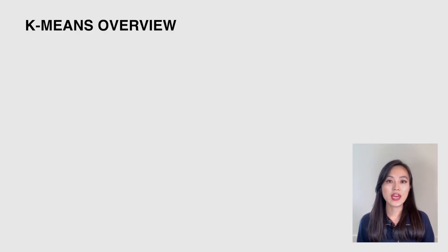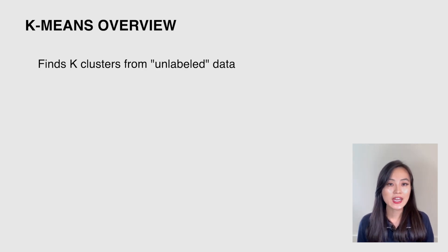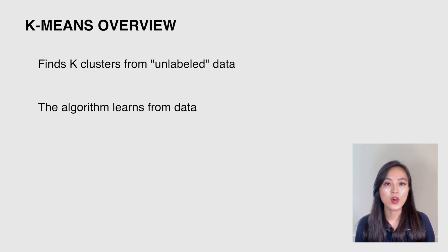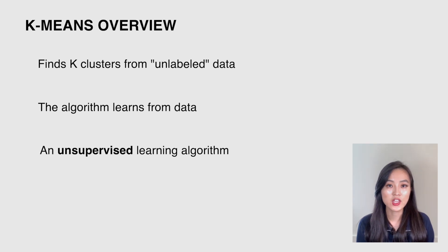Let's start with an overview of the K-means algorithm. K-means algorithm is the algorithm to find the k clusters from a bunch of unlabeled data points. When I say unlabeled, it means that the data itself does not tell us which point belongs to which cluster. Rather, the algorithm learns from the data and tells us the labels. The label in this case refers to the cluster a point belongs to. That's also why K-means clustering is a kind of unsupervised learning algorithm.